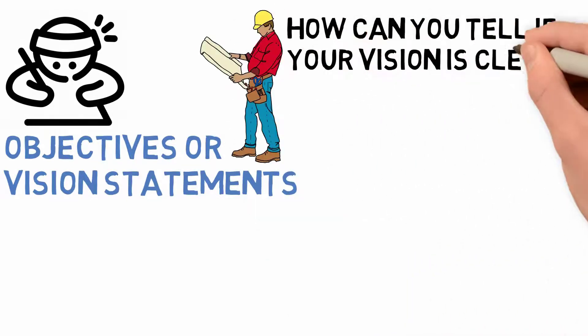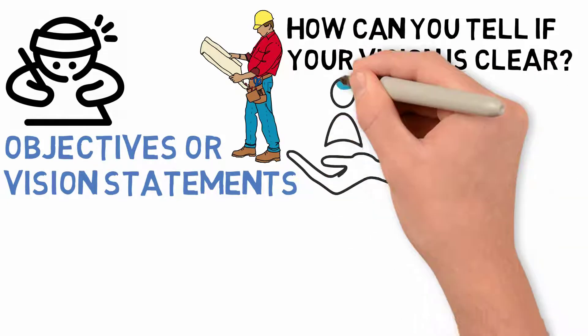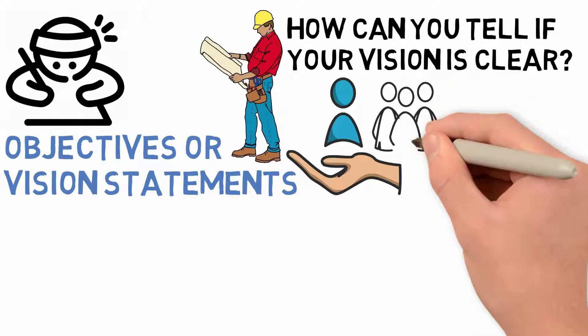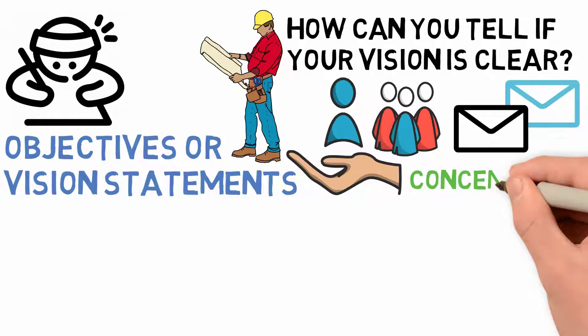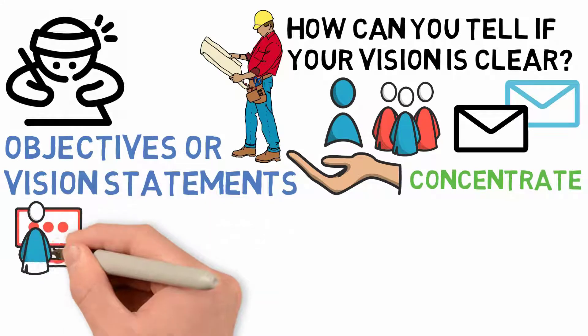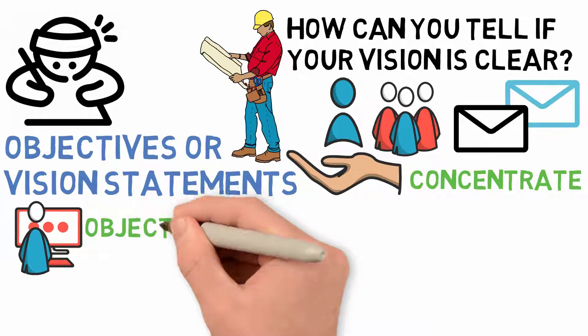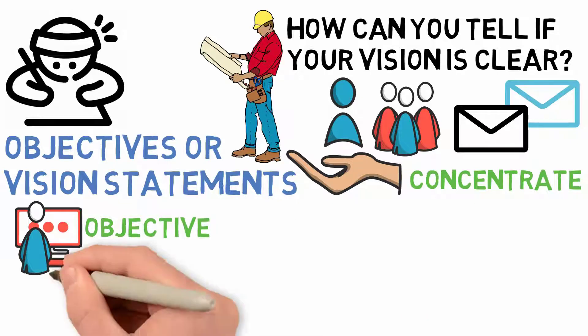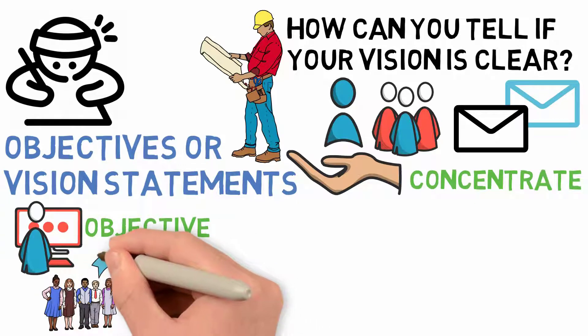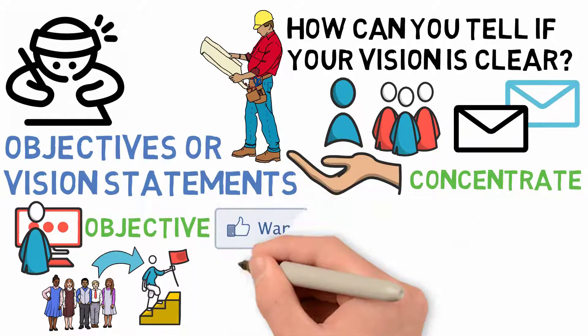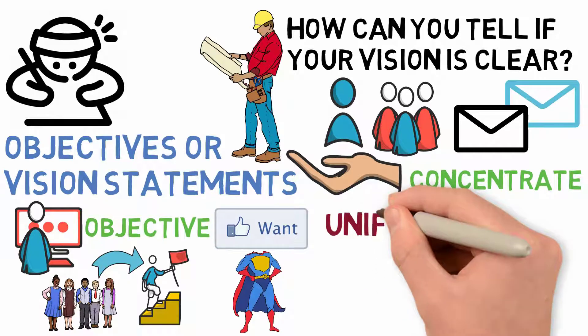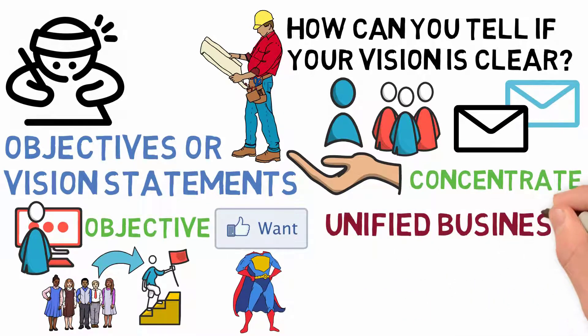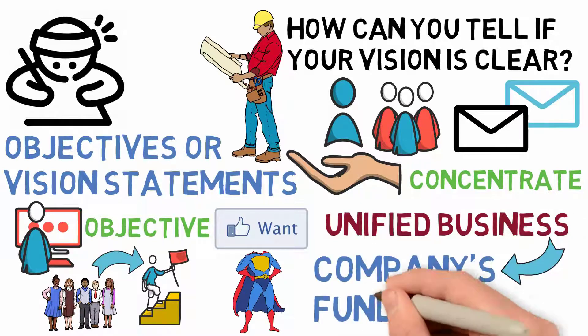How can you tell if your vision is clear? Would everyone give the same answer if a stranger asked each employee, why does this firm exist? If you're not sure that the visitor would receive a similar response from every worker, concentrate on this area first. It's unrealistic to expect your employees to collaborate if they don't understand the overall objective. How can your staff operate together if they disagree on what the ultimate goal should be? We want to combine the company as a whole in order to provide a uniform client experience. That's why, in order to become a unified business, you must first define your company's fundamentals.